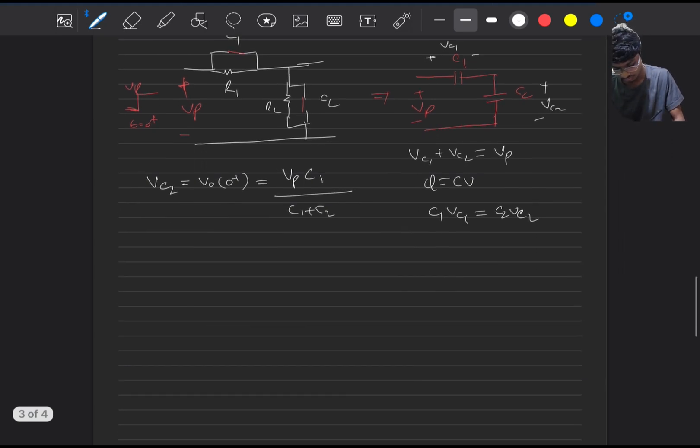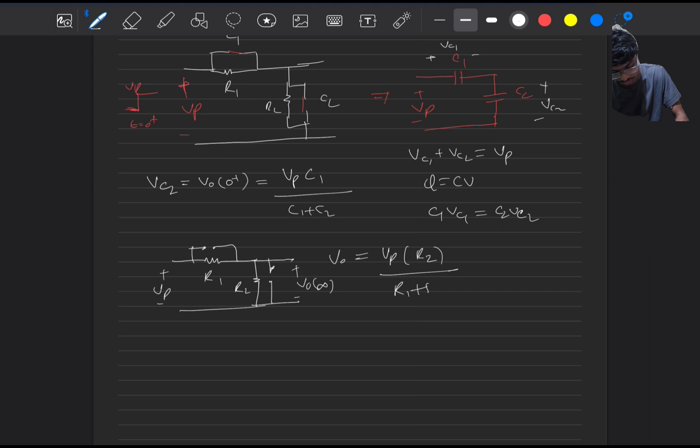Now we will go for the final steady state voltage across the output node. Finally the current through the caps will be zero and it will act like a simple voltage divider circuit where we have applied Vp. V0 of infinity should be equals to Vp into R2 divided by R1 plus R2.